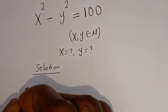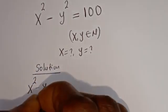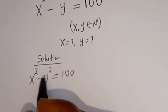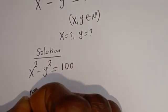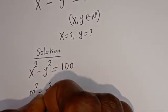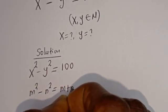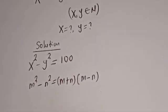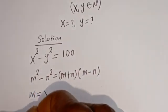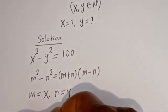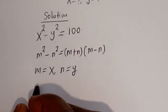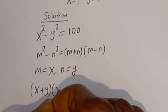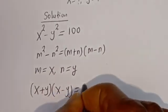We have x squared minus y squared is equal to 100. This is in the form of a perfect square difference. If you have m squared minus n squared, this is equal to (m + n)(m − n), where m equals x and n equals y. Then we have (x + y)(x − y) is equal to 100.